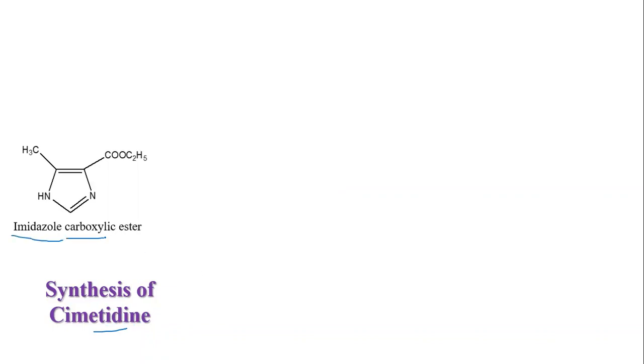Today we will discuss the synthesis of cimetidine. Cimetidine is an H2 antagonist. The precursors or reactants for cimetidine — it is basically synthesized from imidazole carboxylic ester, because the main pharmacophore or heterocycle present in cimetidine is imidazole. So we need imidazole carboxylic ester.